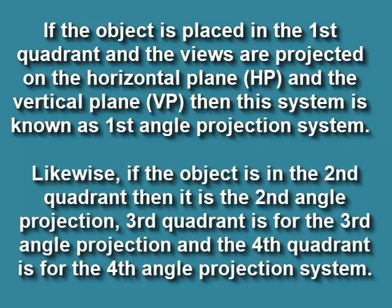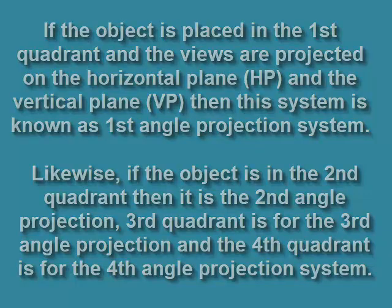Likewise, if the object is in the second quadrant, then it is the second angle projection. The third quadrant is for the third angle projection and the fourth quadrant is for the fourth angle projection system.